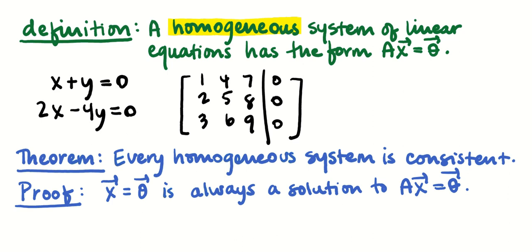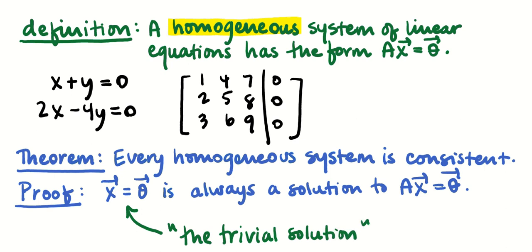I want to point out that we're going to call x equals zero the trivial solution. With real numbers, if ax = 0 and a is not zero, then x must equal zero. That's not always the case with matrices — we've already seen situations where we did matrix multiplication where neither the matrix nor the vector we multiplied by were zero, and we'll have a lot more to say about that in the coming weeks.